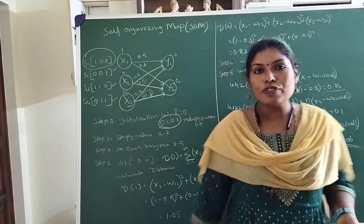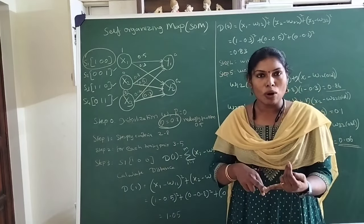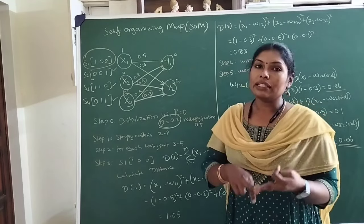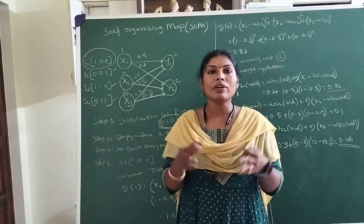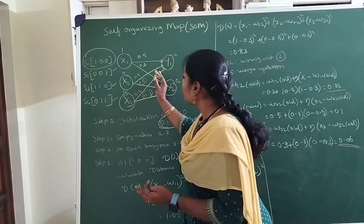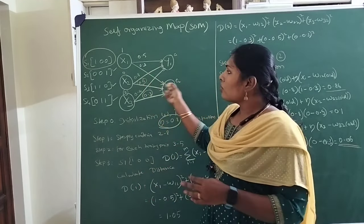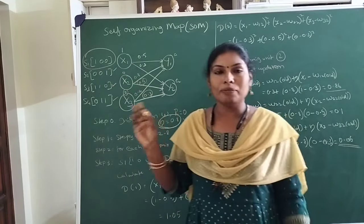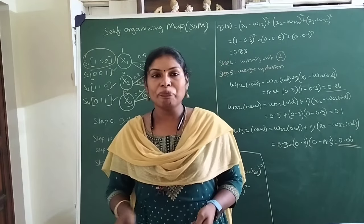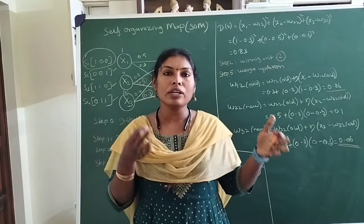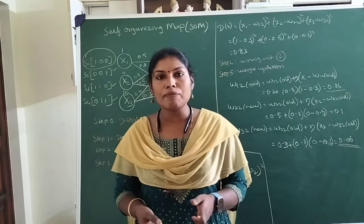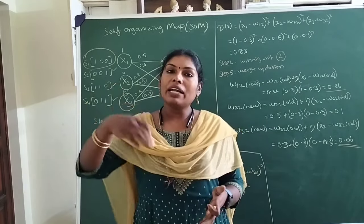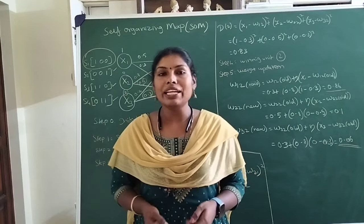This is the actual working mechanism of the self-organizing map. It is an unsupervised learning model that follows the principle of topological preservation and the winner-takes-all procedure. We choose one winning cluster unit and update the weights to bring them closer to the presented input pattern, so that next time the same pattern is applied, the winning unit gets selected. The similar principle is followed for learning vector quantization, the next algorithm, which is a supervised learning model that we will look into in the next video session.